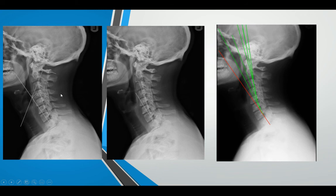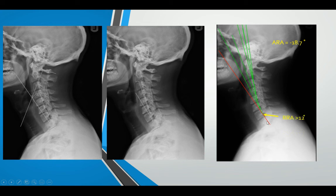Going back to the previous example where the four-line Cobb angle gave 53.4 degrees of lordosis on one measurement and 12.7 degrees on the other — using the posterior tangent method, the red line travelling up the posterior tangent line of T1 shows that when we measure the displacement distance between C7 and T1, we ended up with an ARA of 18.7 degrees total, with the majority — greater than 12 degrees — occurring right between T1 and C7, indicating possible segmental instability. If we use the four-line Cobb angle method, we miss this, and the patient may not have the best outcomes when applying certain types of treatment to the area.